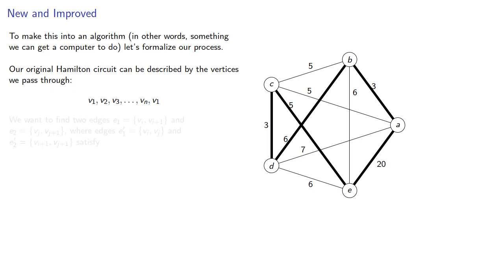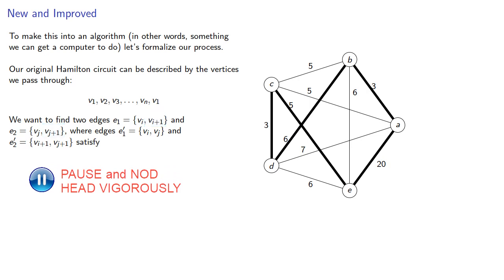We want to find two edges, E1 and E2, where edges E1' and E2', where E1' consists of the initial vertex of both and E2' consists of the terminal vertex of both. And we want the weights of the original pair of edges to exceed the weights of the new pair of edges. And if that happens, we can swap the edges out.